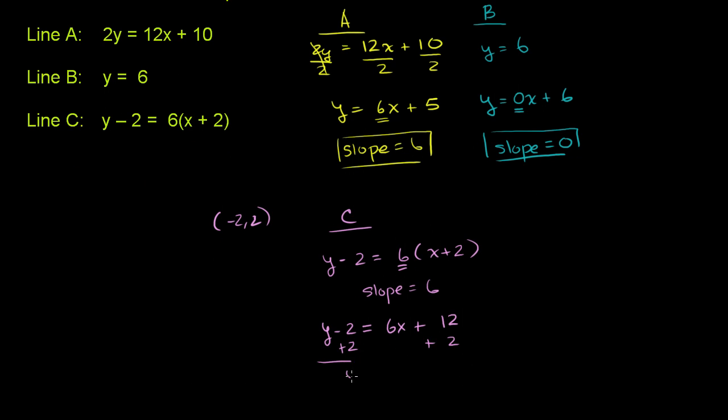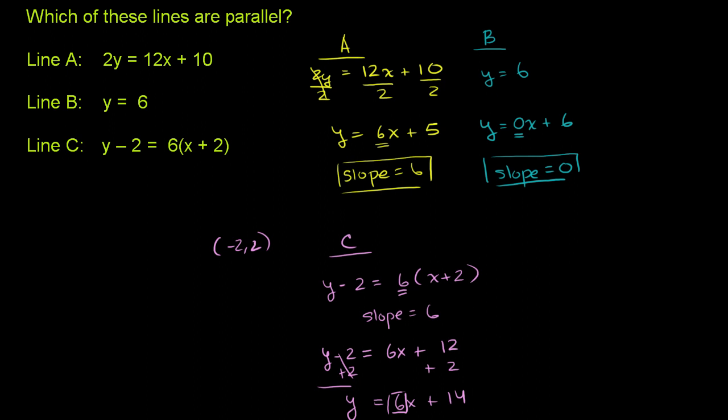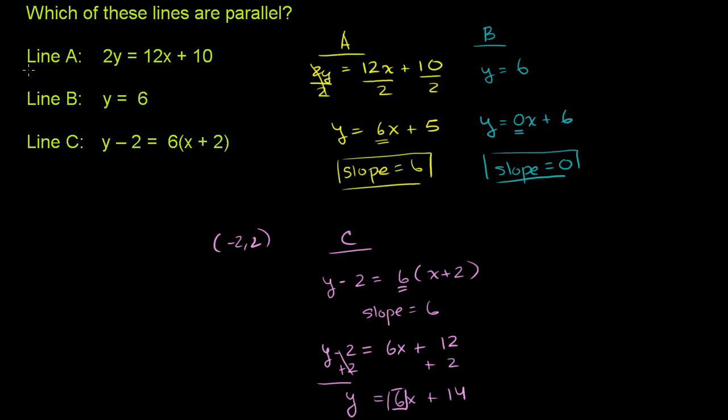you get y, because these guys cancel out, is equal to 6x plus 14. So you see, once again, the slope is 6. So line A and line C have the same slope. So line A and line C are parallel, and they're different lines. If they had the same y-intercept, then they would just be the same line.